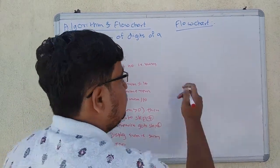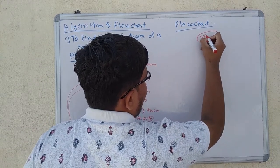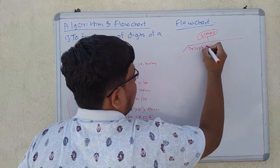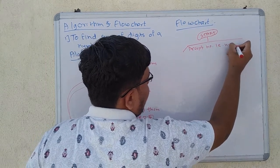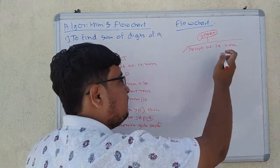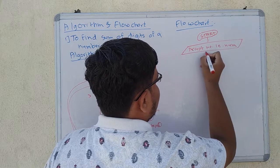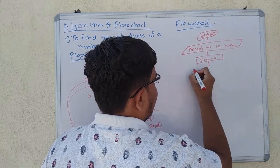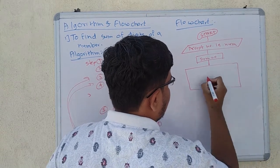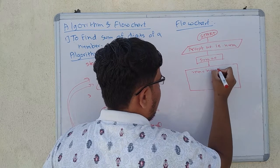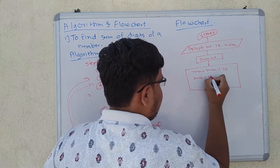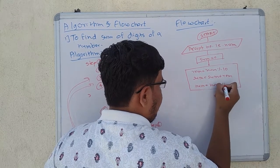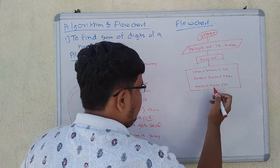Now let's see the flowchart. Step 1 is Start, as usual. Step 2 is: accept number, that is, num. Step 3 is: initialize sum equal to 0. Step 4 contains: remainder equals num mod 10, sum equals sum plus remainder, and num equals num divided by 10. This entire step 4 is in one process block.